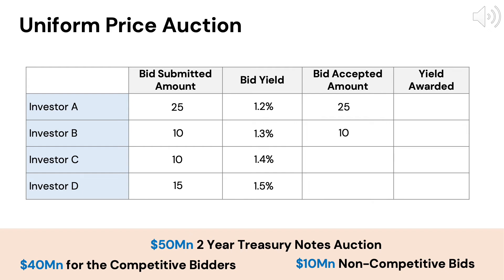With $35 million of Treasuries awarded and $5 million remaining, Investor C gets awarded the remaining $5 million out of his bid amount of $10 million. Since Investor C's bid yield of 1.4% is the stop-out yield, all the accepted bids from Investors A, B, and C are provided a yield of 1.4%.